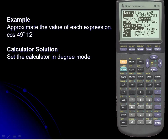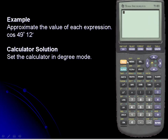We'll scroll down to the third line, scroll over to degree, and lock in degree by pressing enter. So we're now in degree mode. I'll now go back to my home screen using second and mode, which is the quit key.